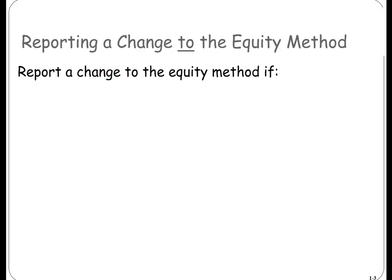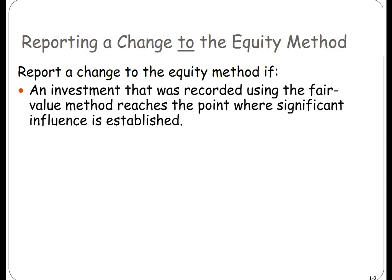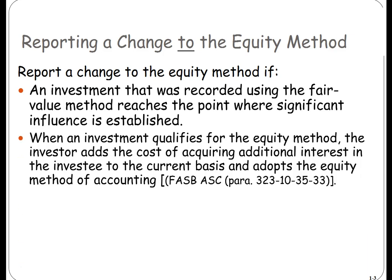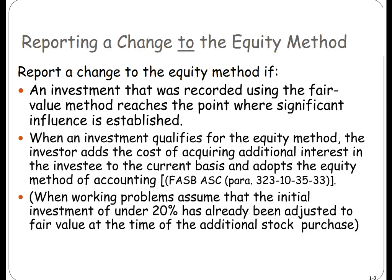Reporting a change to the equity method: you report a change to the equity method if an investment that was recorded using the fair value method reaches the point where significant influence is established. When an investment qualifies for the equity method, the investor adds the cost of acquiring additional interest in the investee to the current basis and adopts the equity method. This is a new change — they used to require a retroactive adjustment, but that is no longer true, especially since we are adjusting to fair market value. When working problems, assume that the initial investment of under 20% has already been adjusted to fair value at the time of the additional stock purchase.